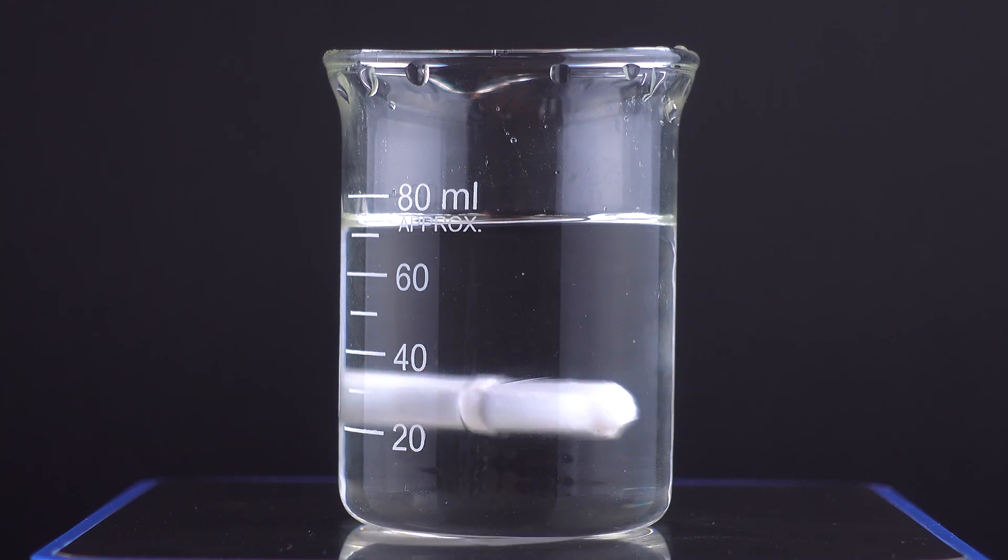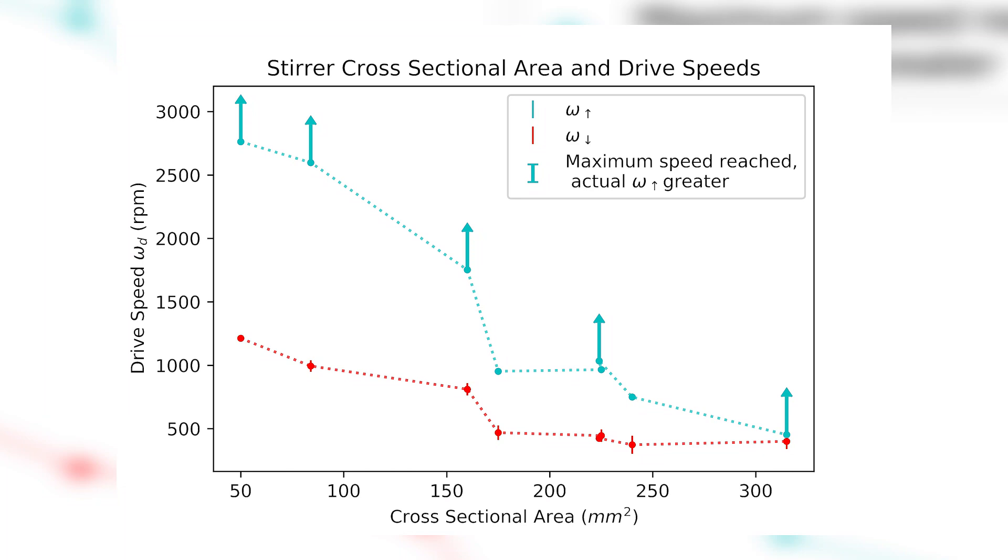I summarized my attempts in this graph. I plotted the omega up and the omega down against the cross-sectional area of the stir bar. As we can see, the smaller bars have a wide range of stable omegas, and the large bar is very difficult to levitate without the edge effects. The upwards arrow indicates that my magnetic stirrer is not powerful enough to reach the omega up. I had to lift up the beaker to start the levitation.